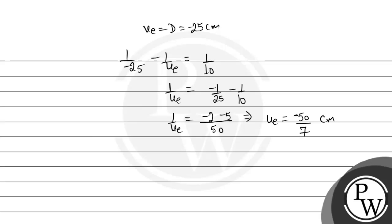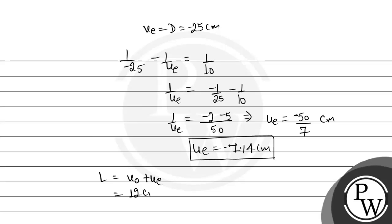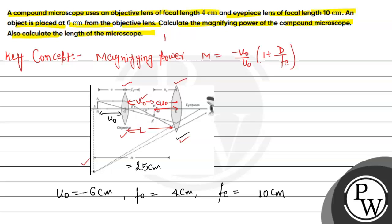So UE works out to be minus 7.14 cm — this is the distance of the object from the eye lens. From the given data, the length of the microscope is V0 plus UE, which is 12 cm plus 7.14 cm, giving 19.14 cm as the final answer. So the length of the microscope is 19.14 cm, and the magnifying power of the compound microscope is minus 7. Hope all of you understood it. Thank you and best of luck.